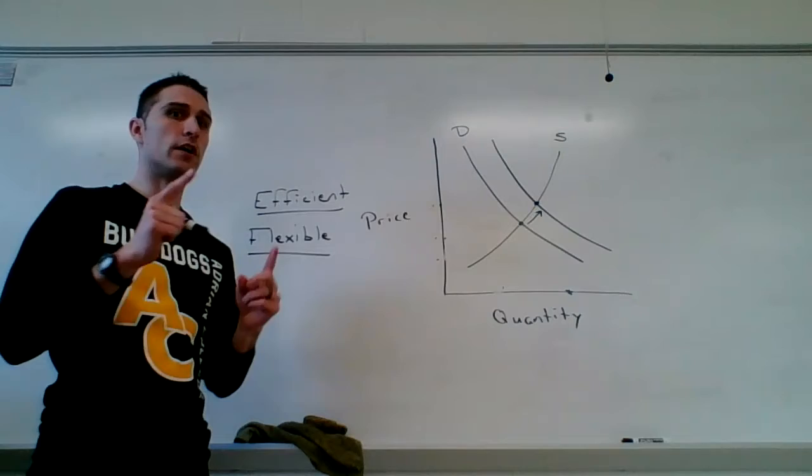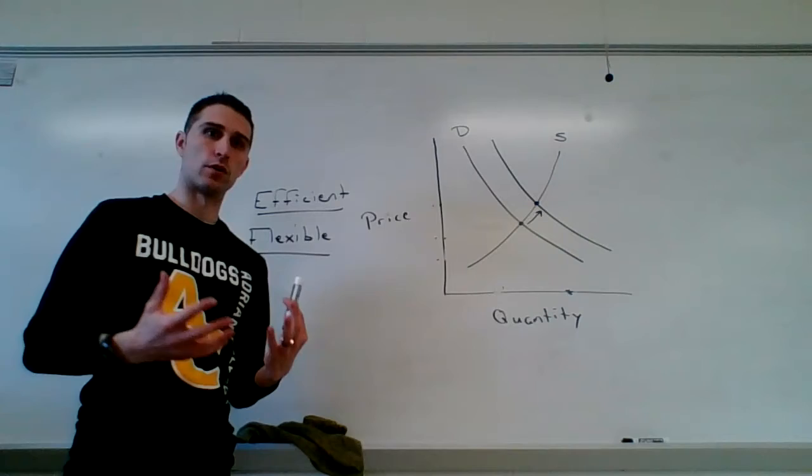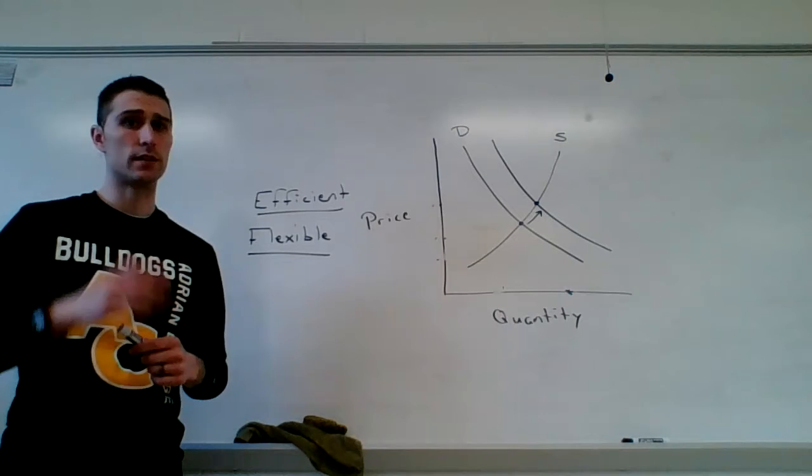Quick review. In the command system, we talked about how the government set prices. Here, the market is setting the price. Something changes. Businesses adjust. If the government sets this price, they can get it completely wrong, which is why we end up with a shortage and surplus. Because, remember, the government lacks the information they need to make effective decisions.